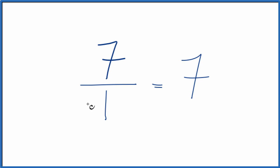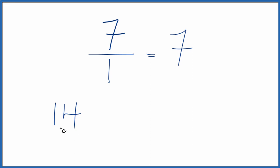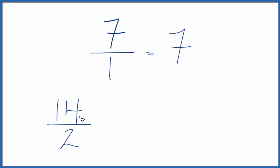To get equivalent fractions, we could just double the numerator and double the denominator. So we take 2 times 7, that'll give us 14, and then 2 times 1 gives us 2. And 14 over 2, that's an equivalent fraction for 7 over 1, or just the whole number 7.